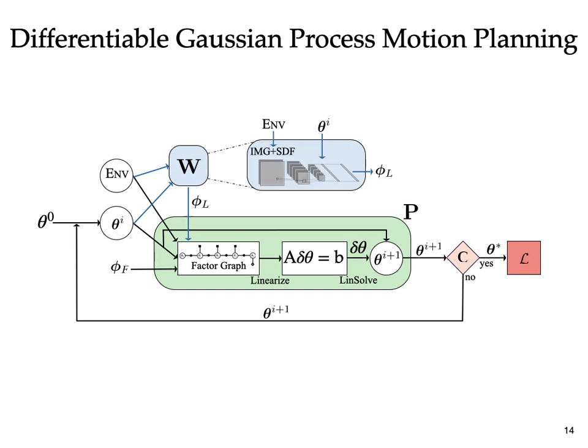Internally, the trainable module W is implemented as a feedforward convolutional neural network that takes as input a bitmap image of the environment, a signed distance field, and a current trajectory estimate and produces phi l as the output at every iteration.